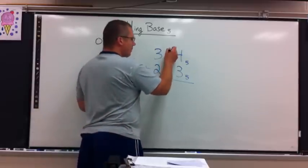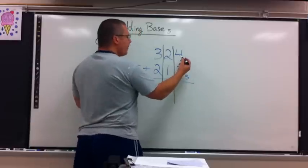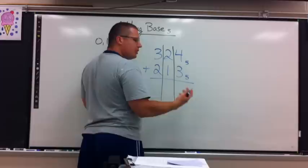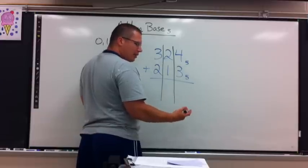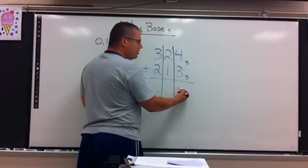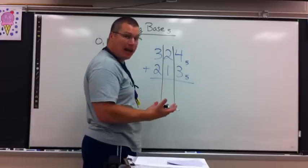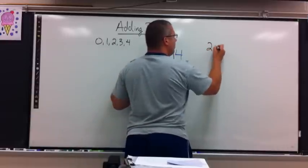I'm going to take this by columns. In the ones column, I have 4 plus 3, which is 7. I can't put a 7 here because it's an illegal digit. So what I have to do is think, how do I carry when I normally add it?